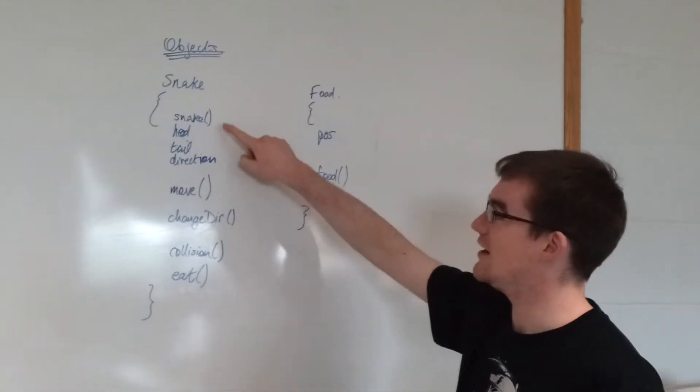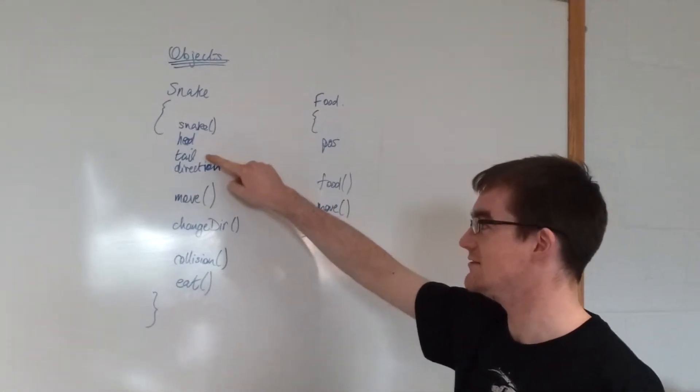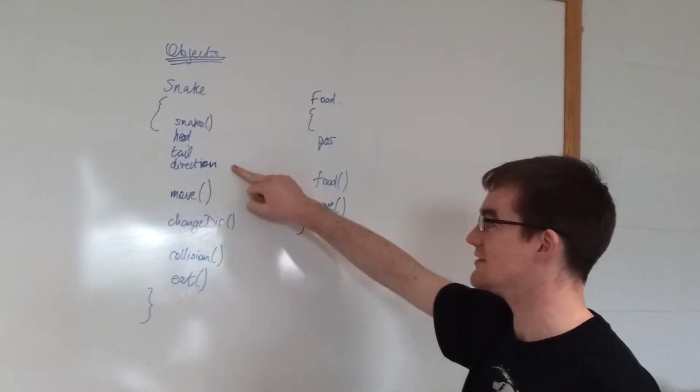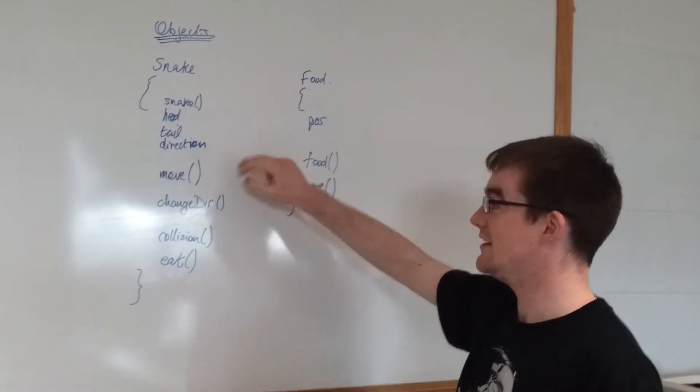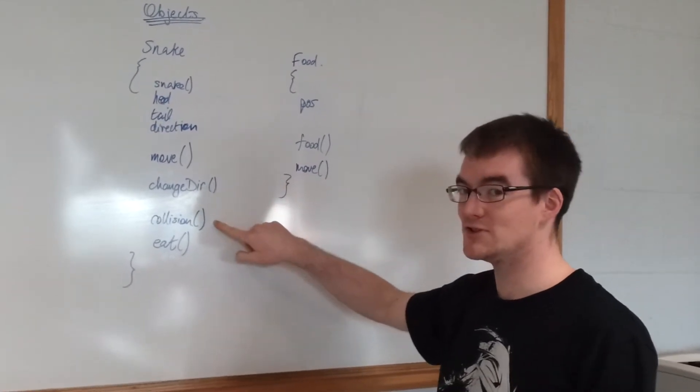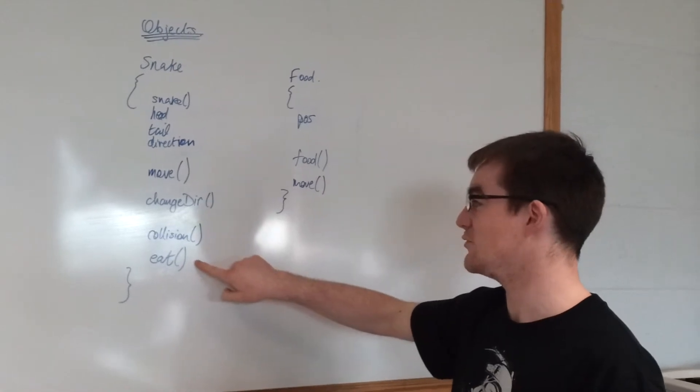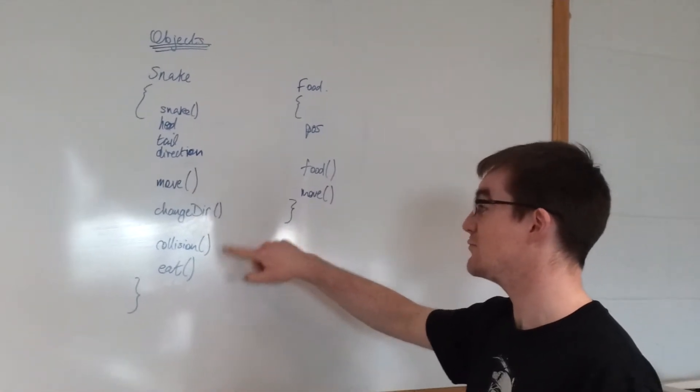So, within our snake, we're going to have a snake constructor. We need the location of the head and the tail, the direction the snake is travelling. Then the functions we need are a move function, a change direction function, a collision function to check if the snake has hit itself or encountered food, and an eat function that we can then call from the collision function.